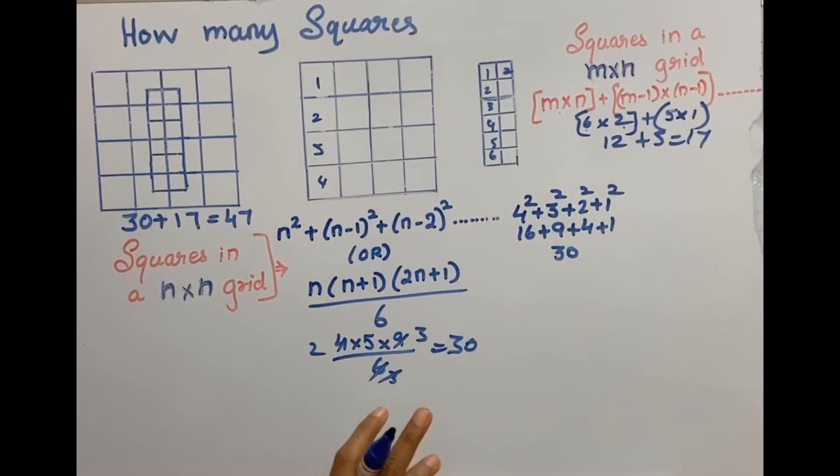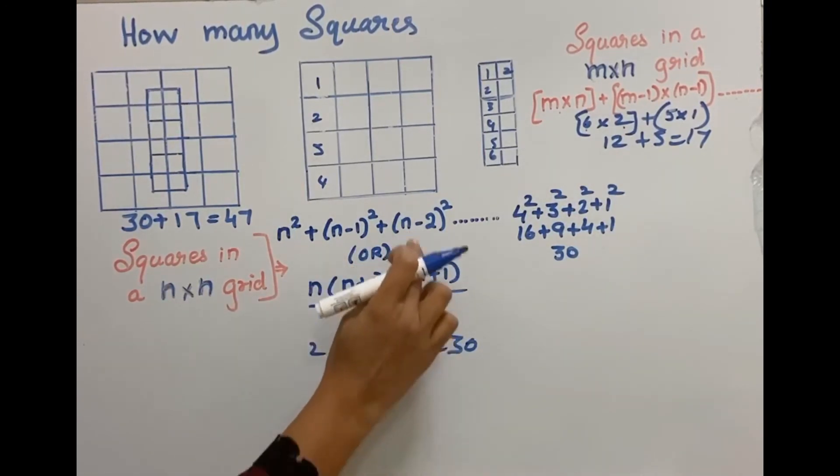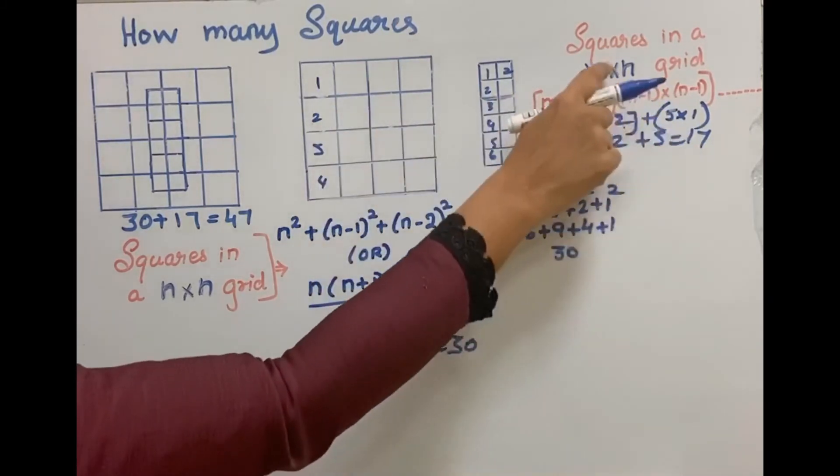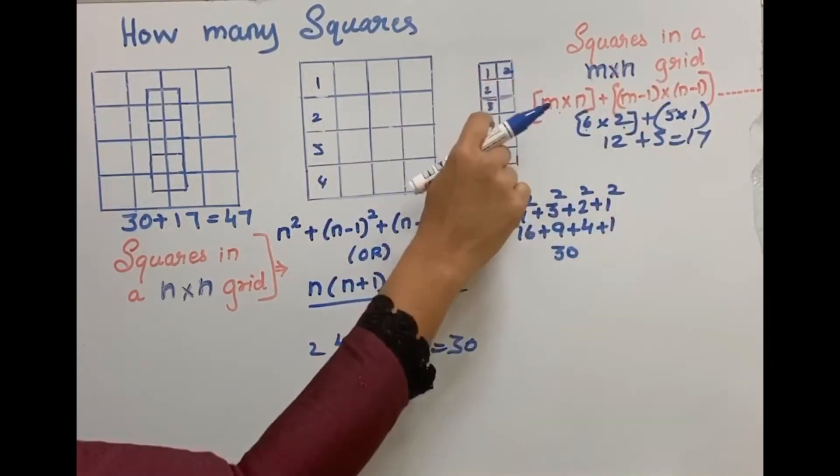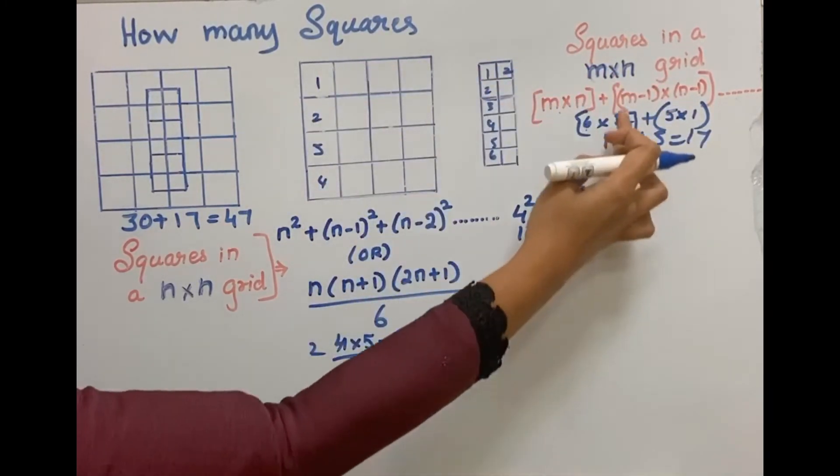So you have to remember this formula in n into n grid to find the squares, either by these two you can find it. In m into n grid, that is rectangular part, in that to find the squares, use this formula.